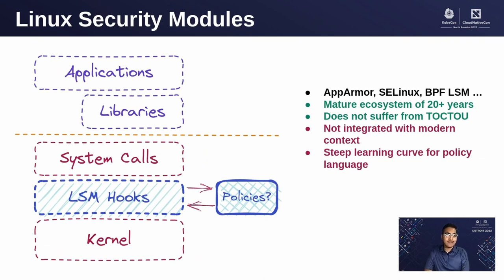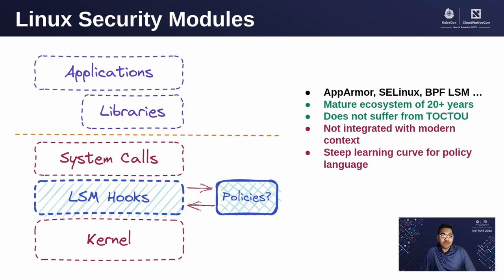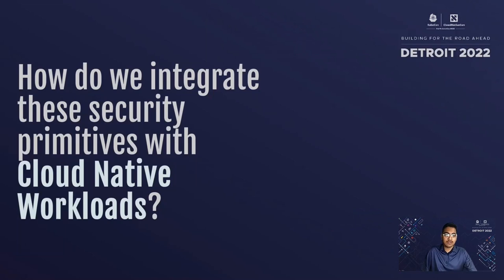Finally, we have Linux Security Modules — AppArmor, SELinux, and BPF-LSM. These are a mature ecosystem with decades of development. They do not suffer from a kernel race condition called time-of-check and time-of-use. But they are not integrated with the modern context, and there is a steep learning curve associated with the policy language of these LSMs. So how do we integrate these security primitives with our modern cloud native workloads?